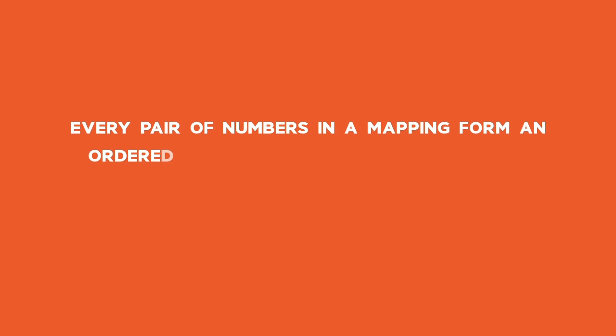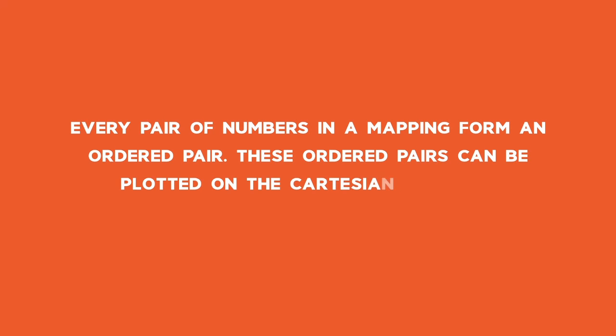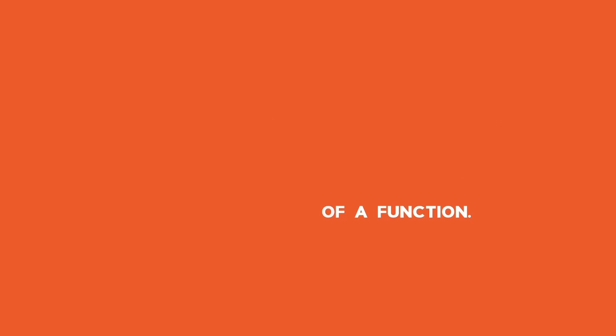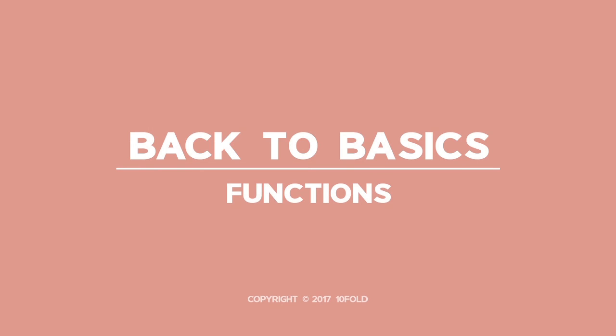Every pair of numbers in a mapping form an ordered pair. These ordered pairs can be plotted on the Cartesian plane to form the graph of a function.